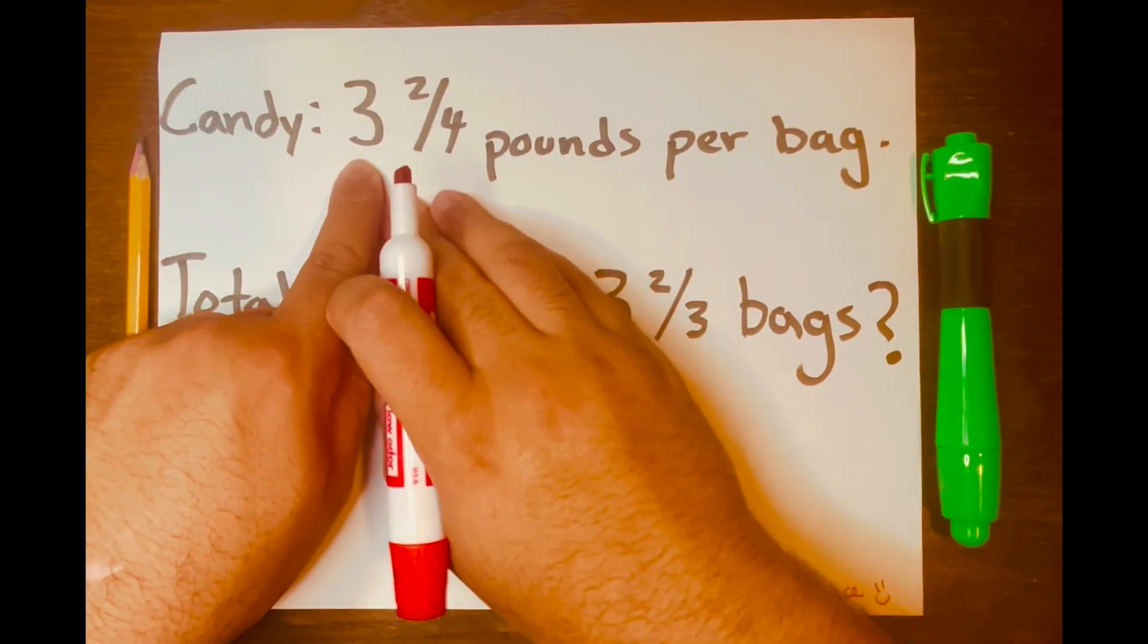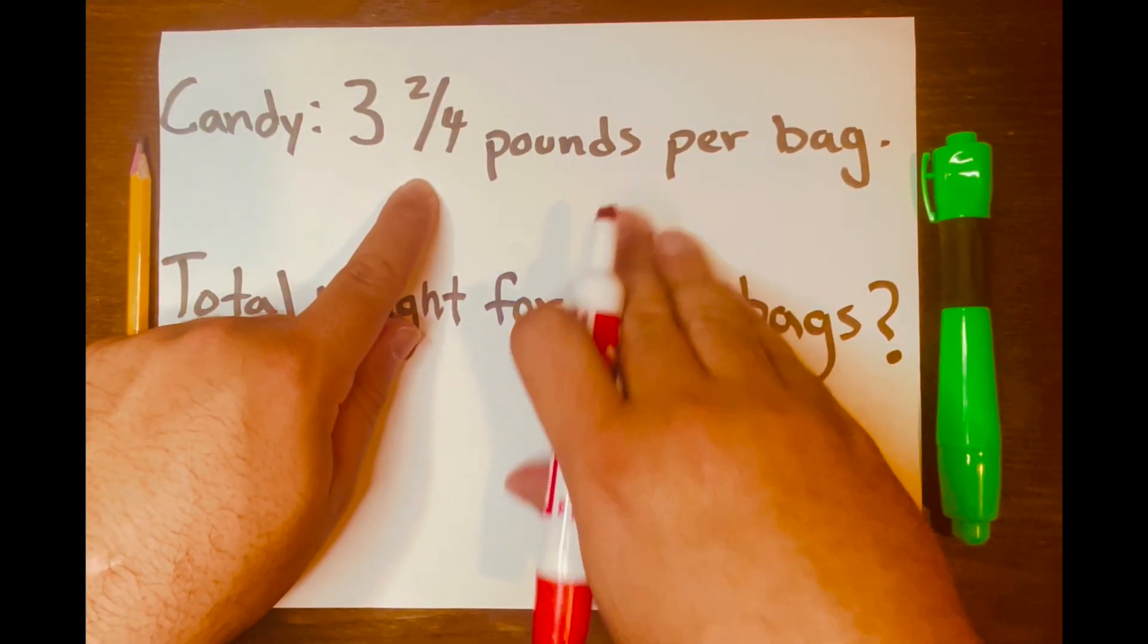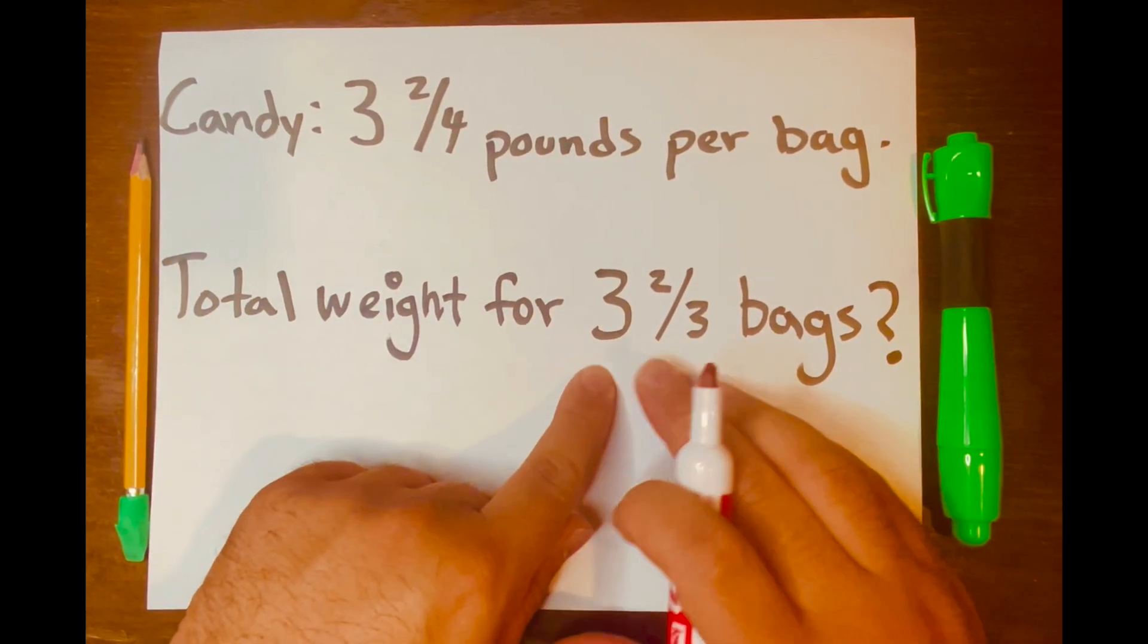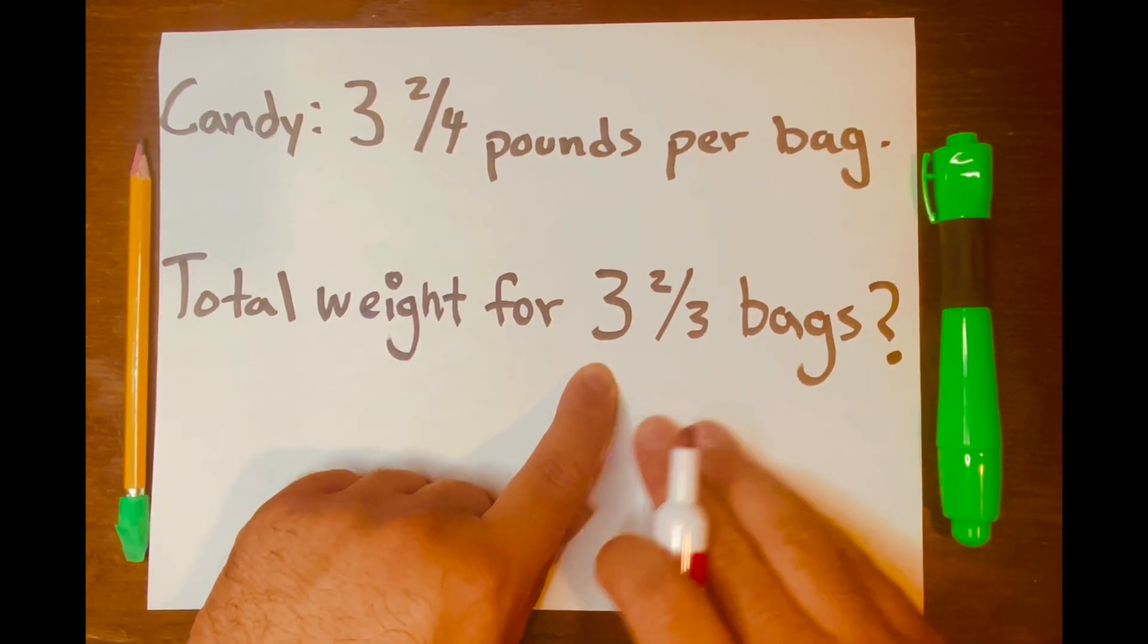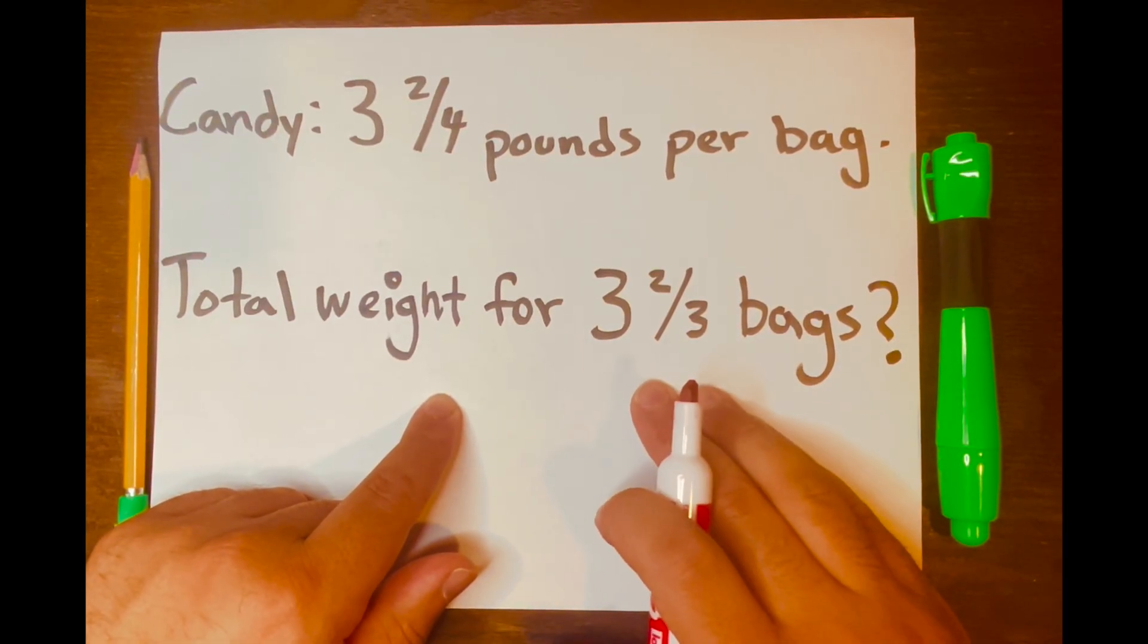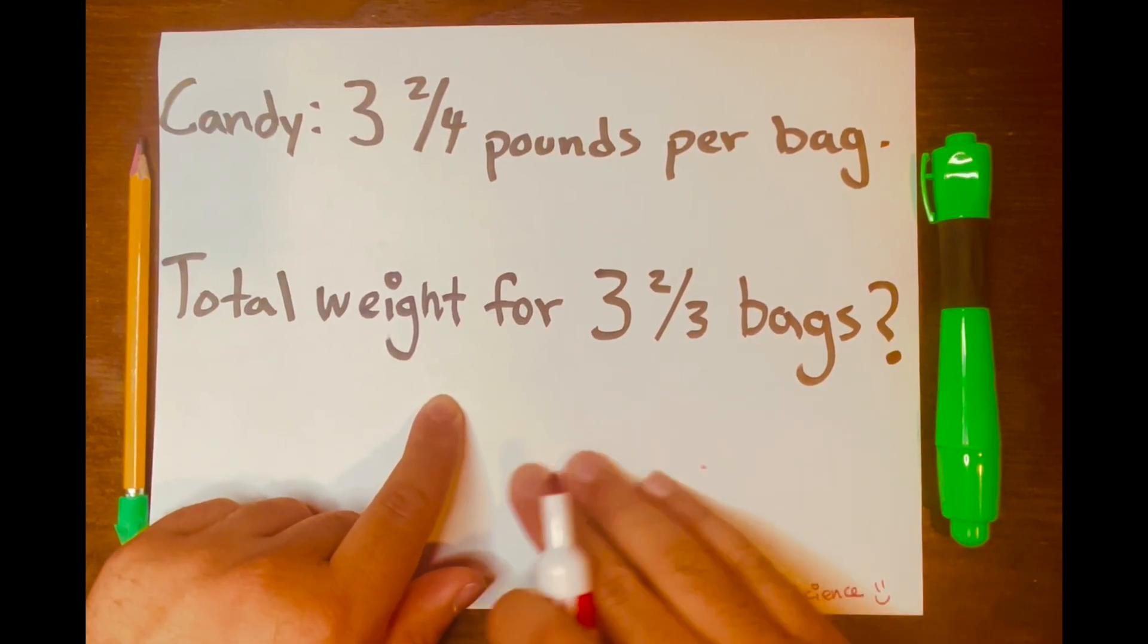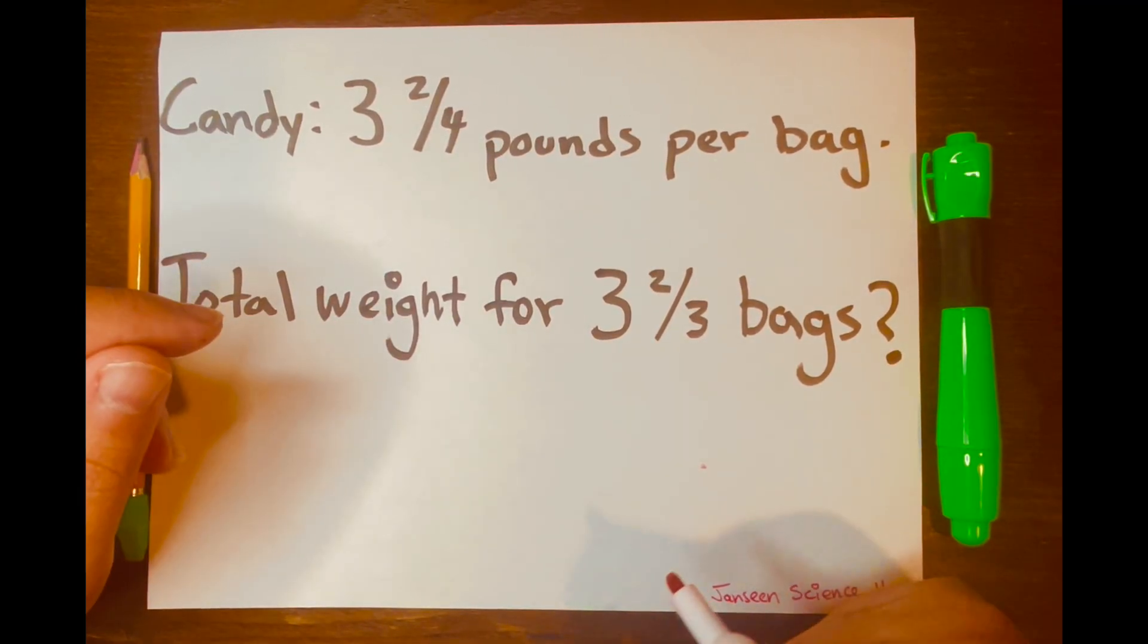So now you have three and two fourths pounds per bag of candy. And you have three and two over three bags total. So I want you to tell me what is the total weight of all your candy combined and type that in the comment section down below. And again, thank you for watching. I'll see you in the next video.